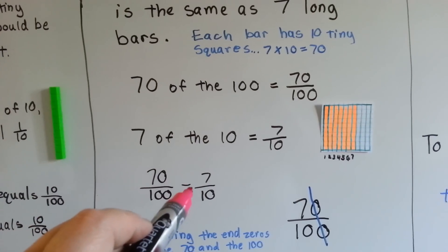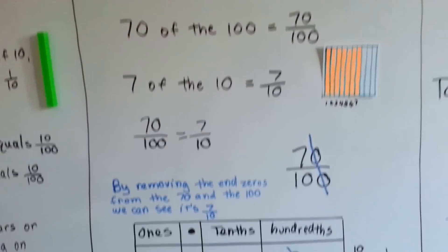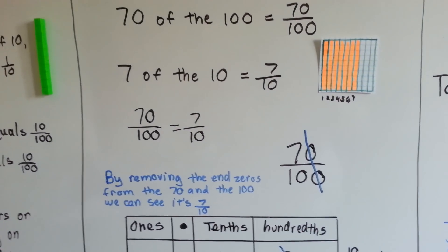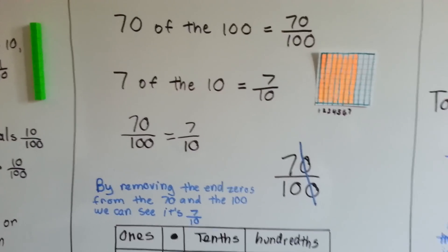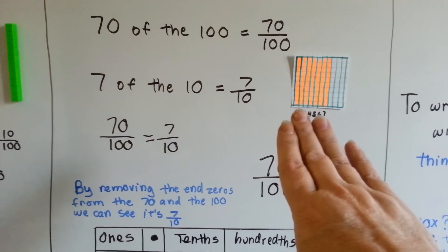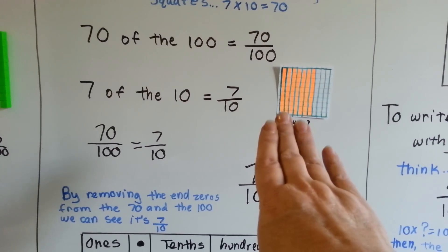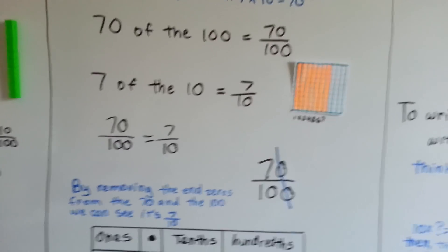Seventy one hundredths can be equal to seven tenths. By removing the zeroes from the seventy and the one hundred, we can see it's seven tenths. Seven tenths, seventy one hundredths.